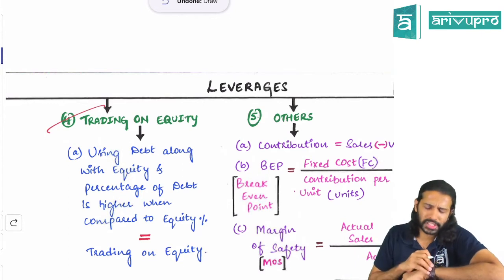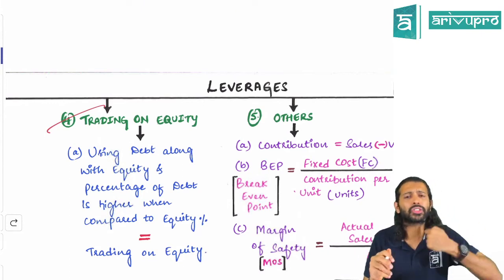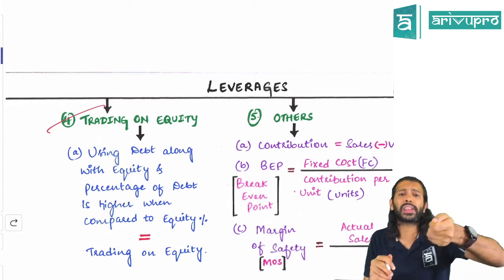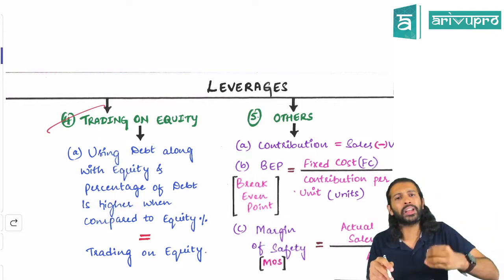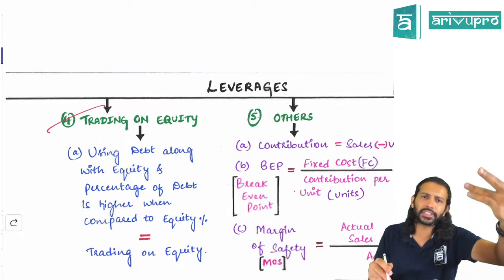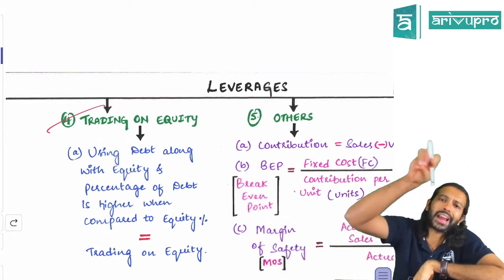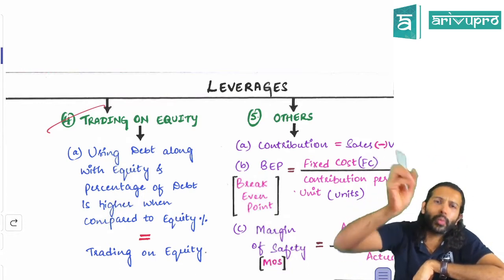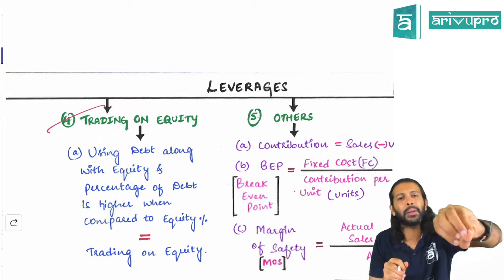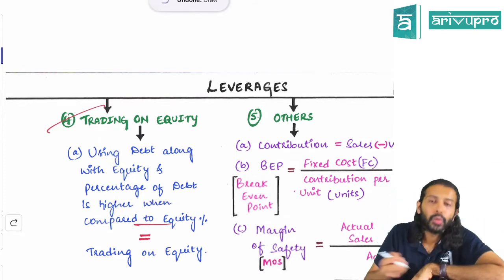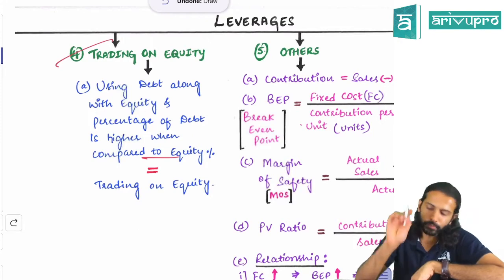Trading on equity is a concept that has appeared since the first chapter. Trading on equity does not mean issuing equity shares. It means that along with equity, you are also issuing debt and other fixed instruments like preference shares — and if the percentage of debt is slightly higher compared to equity, that scenario is called trading on equity.